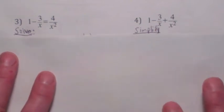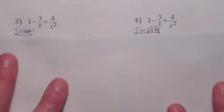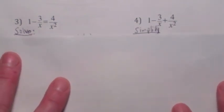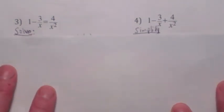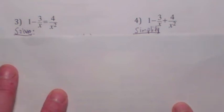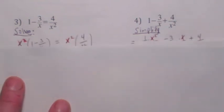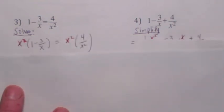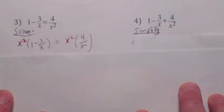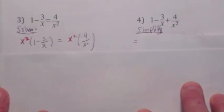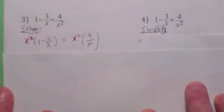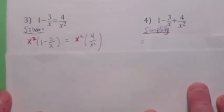Did you notice the first one is an equation and the second one is an expression? The way you handle these is very different. With an equation it's easier because you can get rid of all the fractions. You can always do that when you have an equation — remember. You multiply both sides by the LCD.